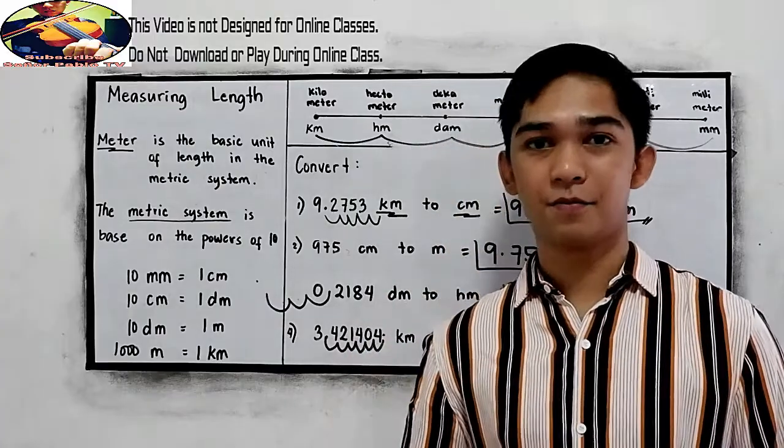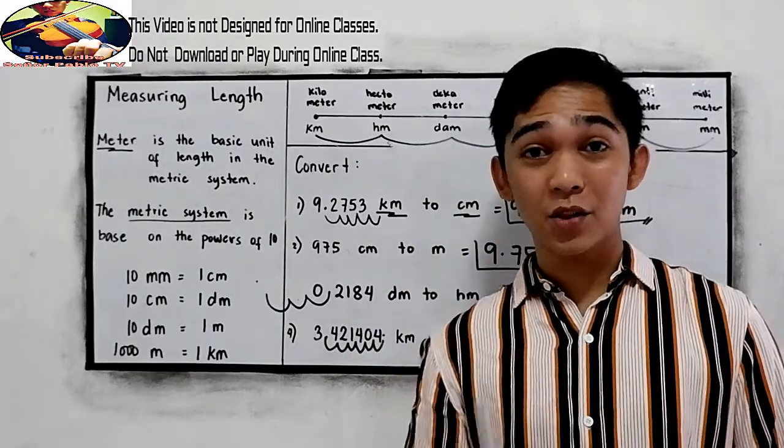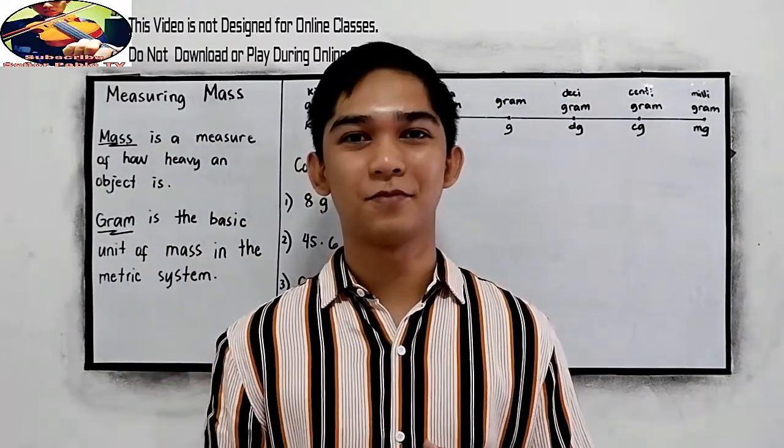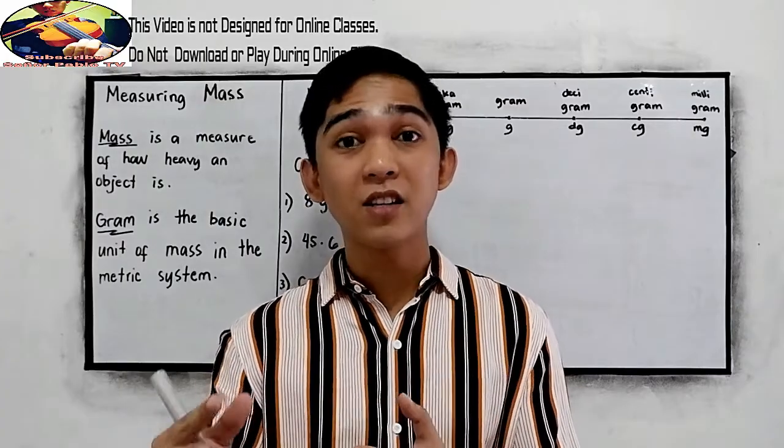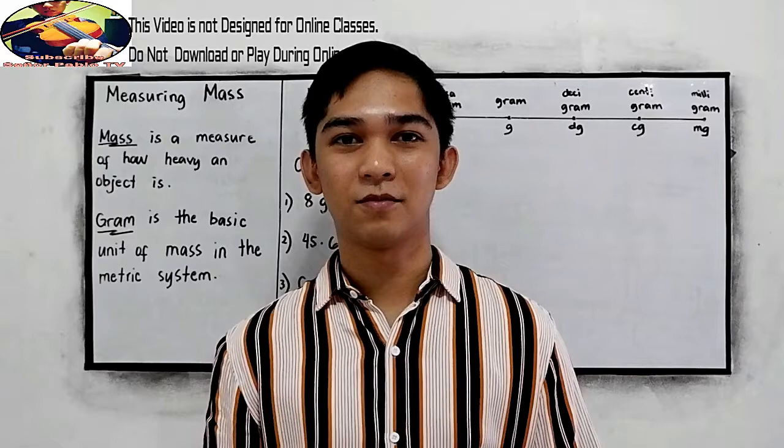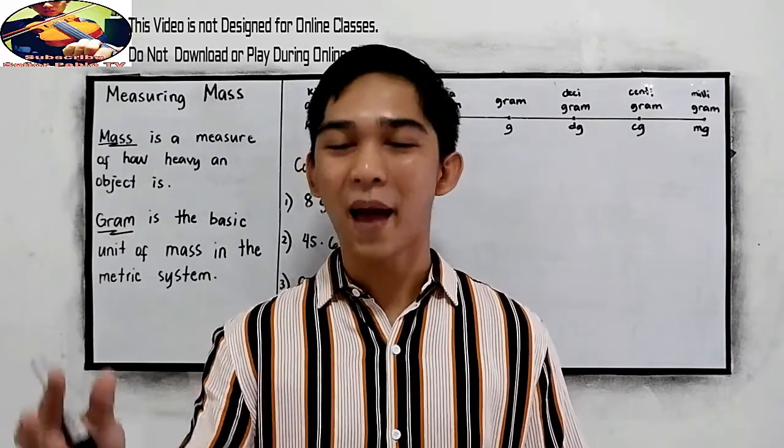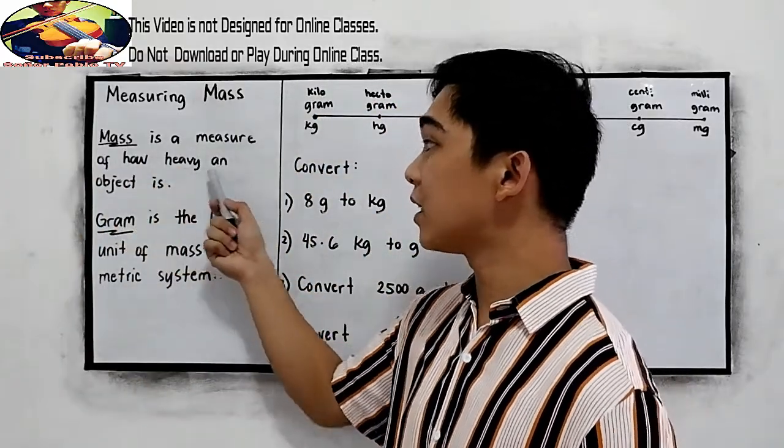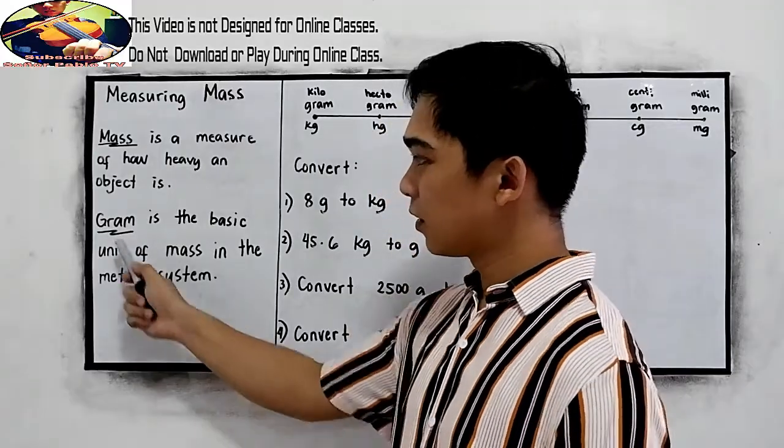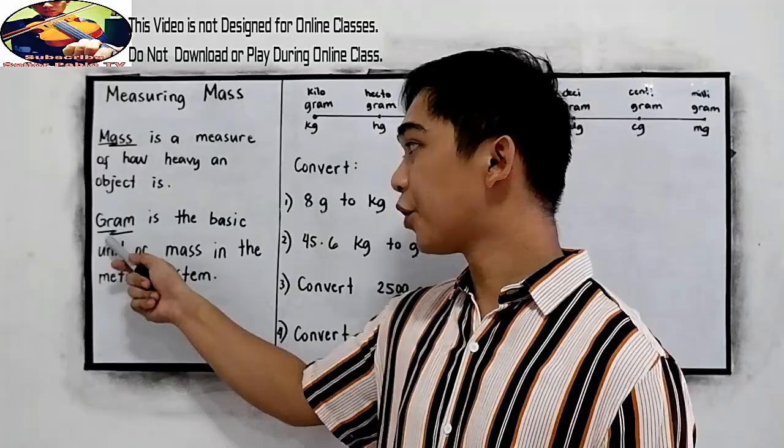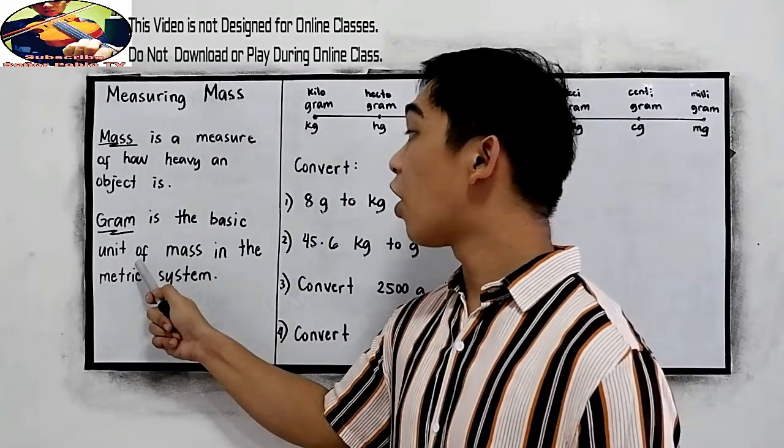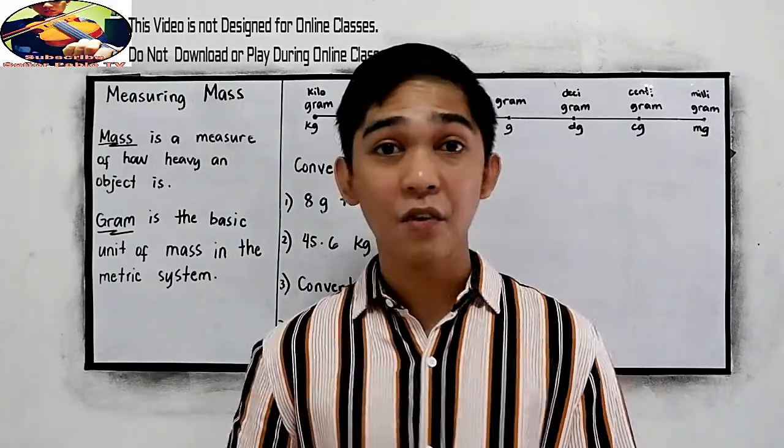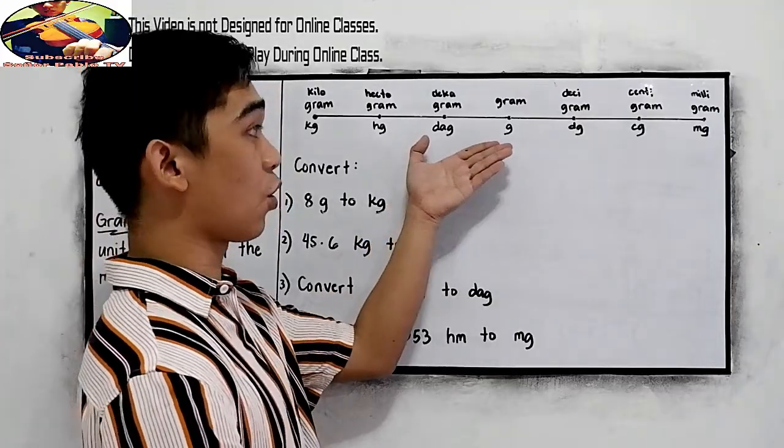Now, you are ready to answer your modules. Measuring mass, or measuring weight. We can use different devices to measure mass. Mass is a measure of how heavy an object is. These are the things you need to remember. Gram is the basic unit of mass in the metric system. We also have our conversion unit here, our conversion table.